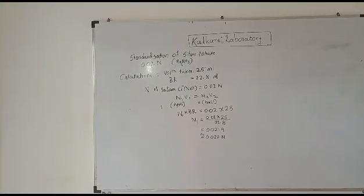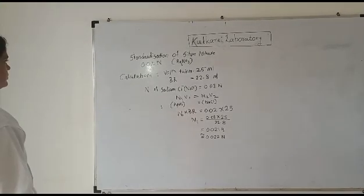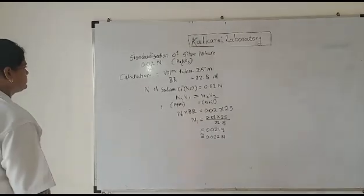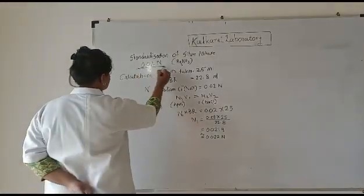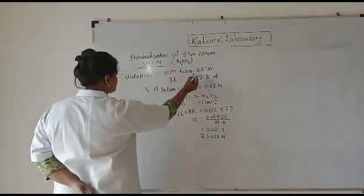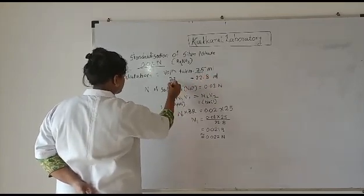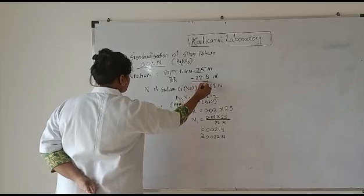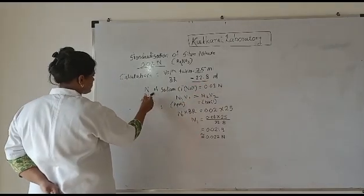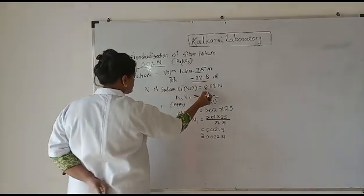This is the calculation of standardization of silver nitrate 0.02 normal. Volume taken is 25 ml, that is the aliquot which we took. Burette reading is 22.8 ml. Normality of sodium chloride is 0.02 normal.